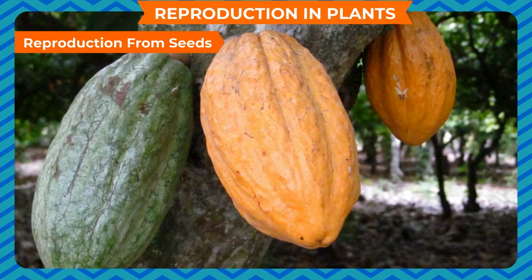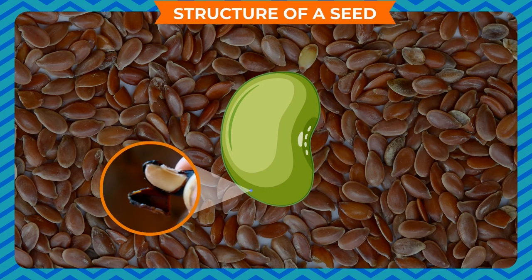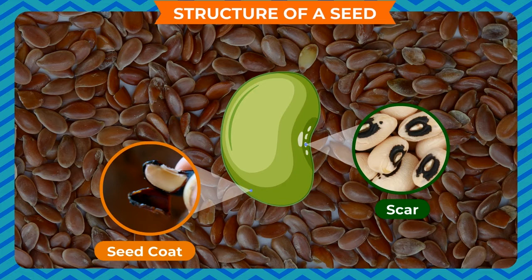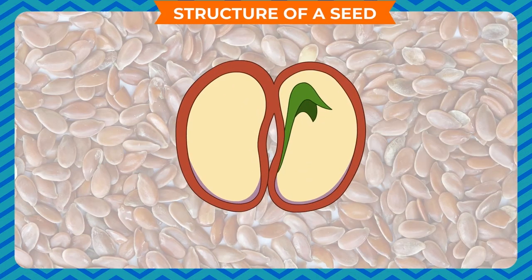Structure of a seed: a seed has three main parts. A thick outer covering called the seed coat protects the seed from damage and drying out. Seed coats of some seeds are thin and soft, or thick and hard. The seed coat has a scar with a tiny hole in it which allows water to enter the seed. Inside the seed coat there are seed leaves known as cotyledons.